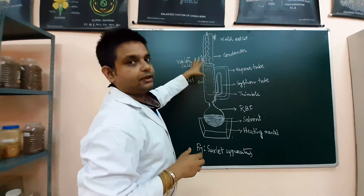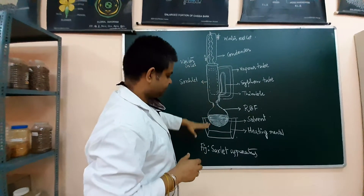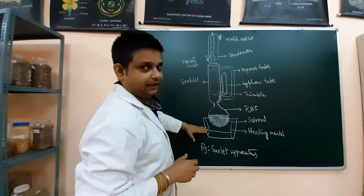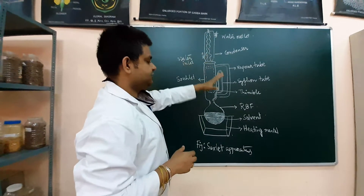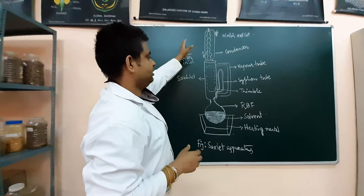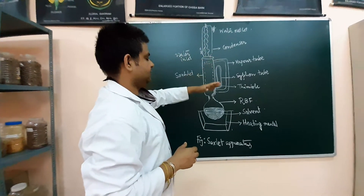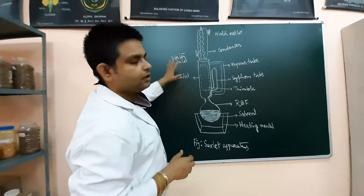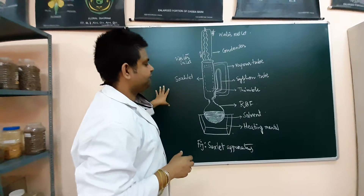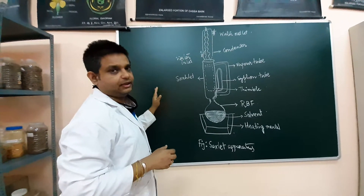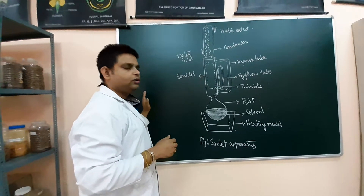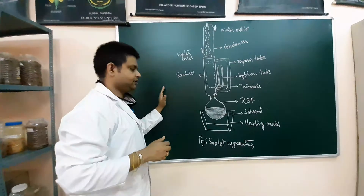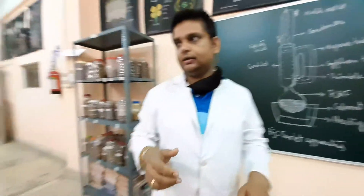Because the same solvent is reused repeatedly, this is called continuous hot percolation. Heat is applied throughout, distinguishing it from cold methods. This method is generally used to extract phytoconstituents from plant species. The main advantage is a higher percentage yield compared to cold maceration and cold percolation methods. Let us now observe the process.